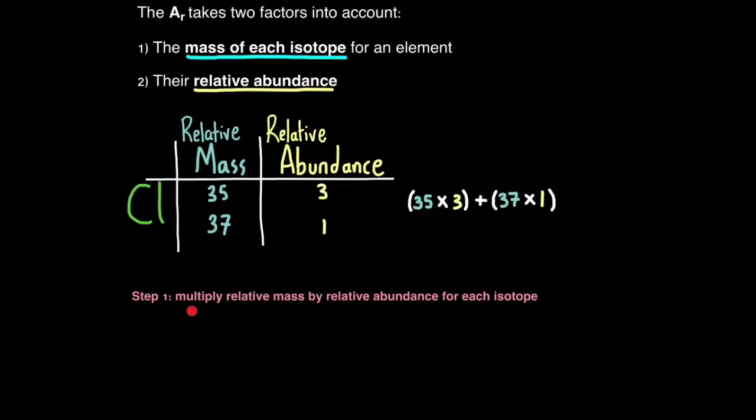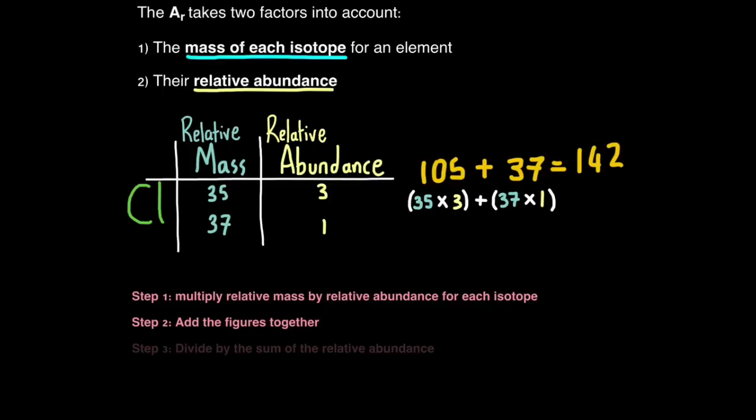Well, the first thing you do is you multiply the relative mass by the relative abundance for each isotope. In other words, 35 times 3 and 37 times 1 as two separate calculations. So 35 times 3, 37 times 1. And that will get you two values, 105 here and 37 here. Next, you add the figures together. So you add 105 to 37. And that gives you a value of 142. And then you divide by the total number of atoms present in the sample or divide by the sum of the relative abundance. Same kind of thing. So the two abundance values we have are 3 and 1. So you do 3 plus 1, which is 4. So effectively, you are dividing 142 by 4. And that will give you a value of 35.5.